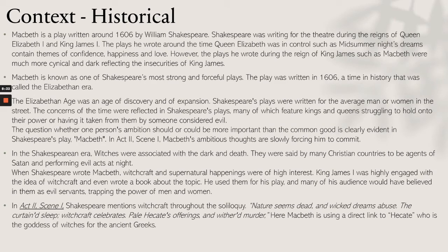Macbeth is a play written around 1606 by William Shakespeare, who was writing for the theatre during the reigns of Queen Elizabeth I and King James I. The plays he wrote during Queen Elizabeth's reign, such as A Midsummer Night's Dream, contain themes of confidence, happiness, and love. However, the plays he wrote during the reign of King James, such as Macbeth, were more cynical and dark, reflecting the insecurities of King James.